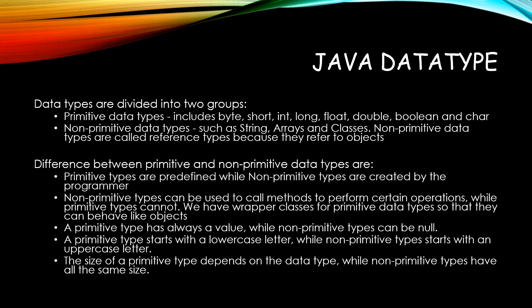You cannot call methods directly on primitive data types — to do that, you must access them through their proper wrapper classes. Primitive data types always have values while non-primitives can be null, since they ultimately refer to an object. A primitive data type starts with a lowercase letter while non-primitives start with an uppercase letter because they are class names. The size of a primitive depends on the data type, while non-primitives all have the same size because they belong to the same type of class.